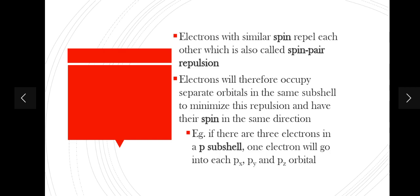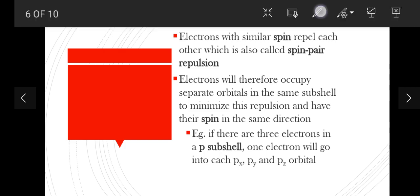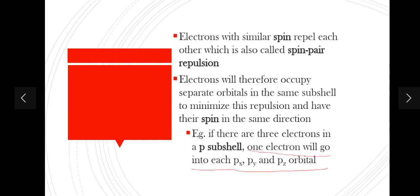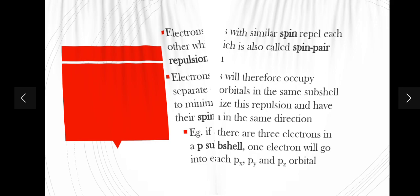For example, in a p subshell there are three p orbitals: px, py, and pz. To completely minimize repulsion, each electron will occupy a separate orbital. So one electron will occupy the px orbital, one the py orbital, and one the pz orbital. If there are three electrons in a p subshell, one electron will go into each orbital.